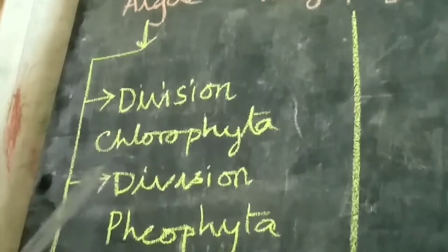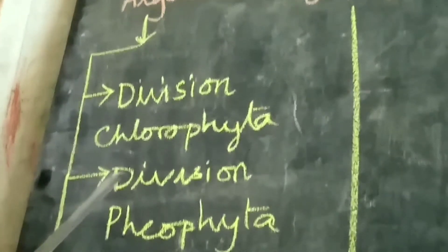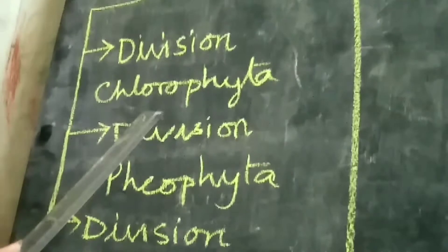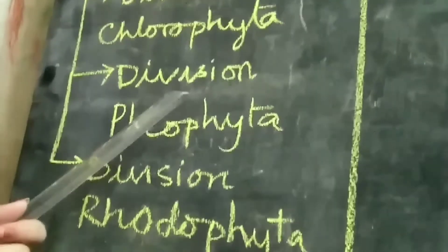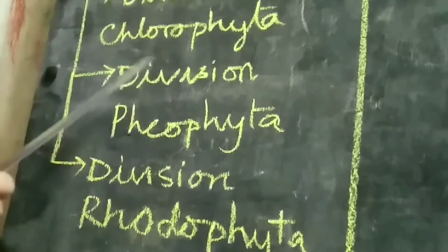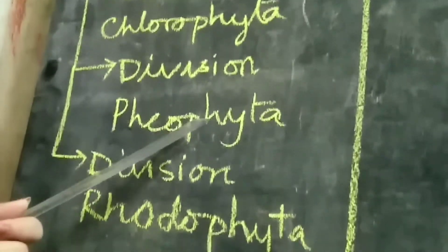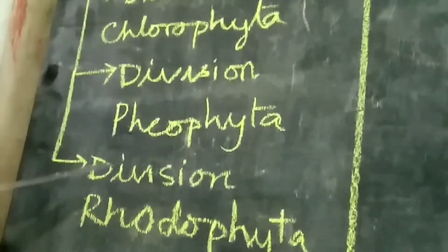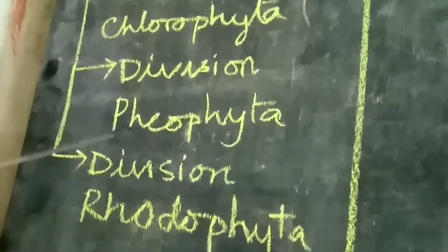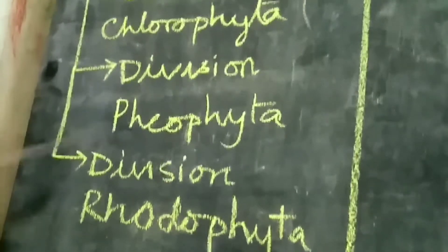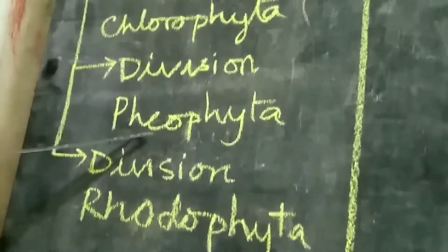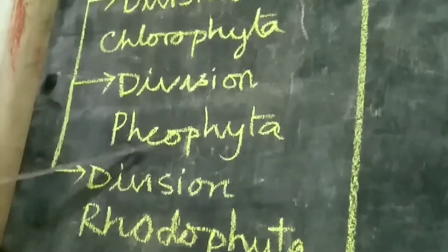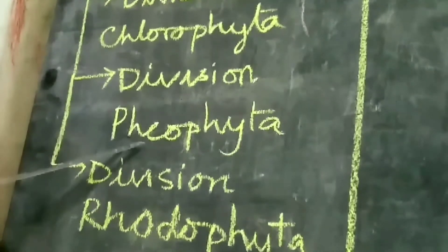Next division is Phaeophyta, meaning brown algae. They are commonly called brown algae. Photosynthetic pigments are chlorophyll A and chlorophyll C. Their reserved food is laminarin and mannitol, but no true starch is present. Examples are Fucus, Laminaria, and Macrocystis.